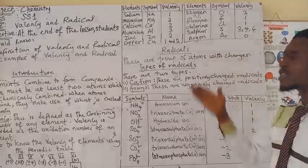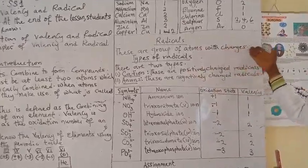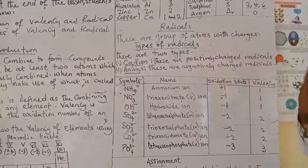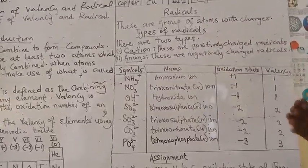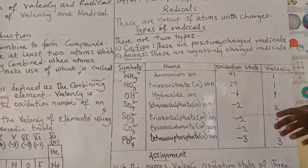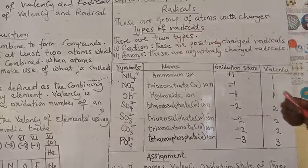Now let's go to radicals. What are radicals? Radicals, these are a group of atoms with charges, group of atoms with charges. That means you have more than one atom combining to form charges. When you have a single atom with charge, we call it an ion.